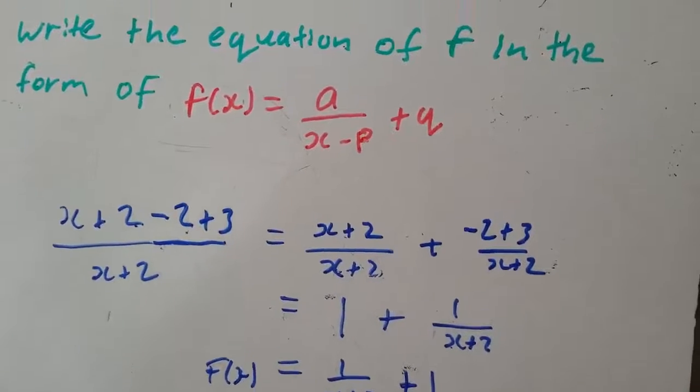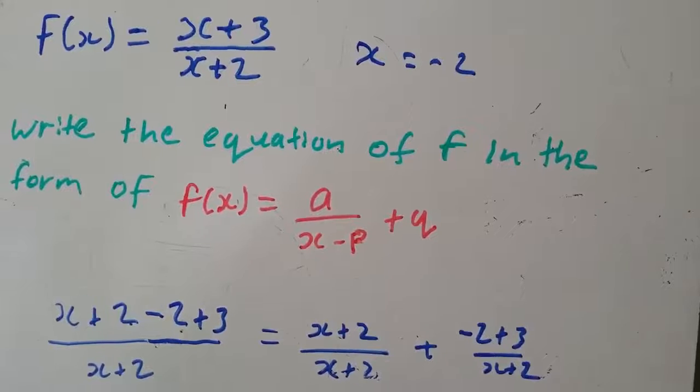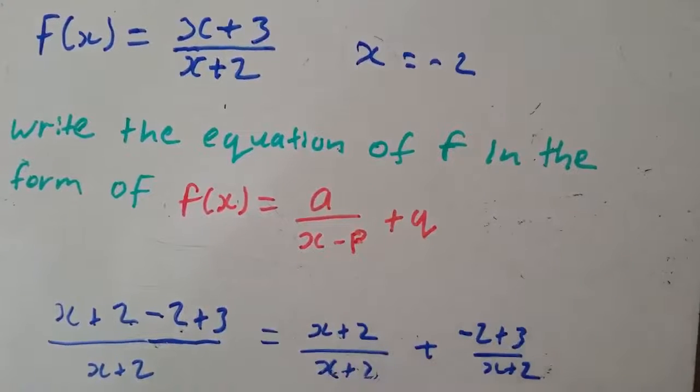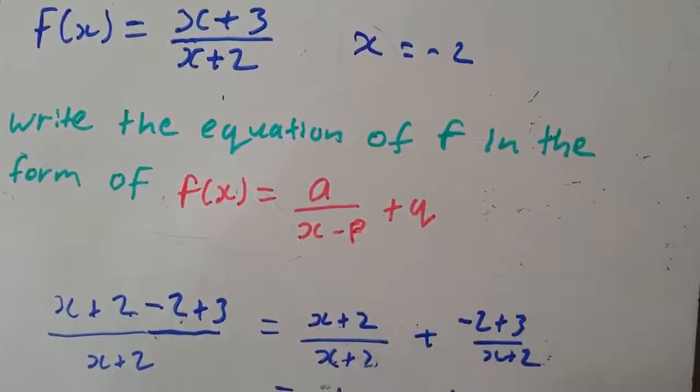Usually whenever they give you this question, most of the time the equation of the horizontal asymptote is more likely to be y = 1.